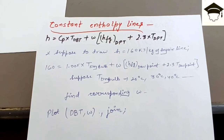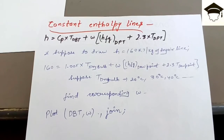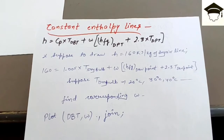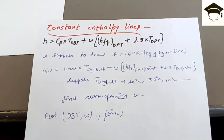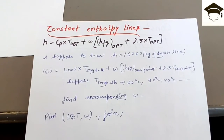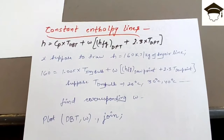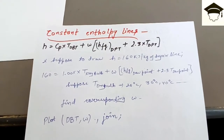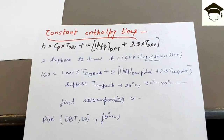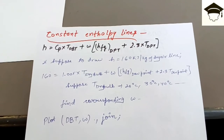Suppose we have to draw H equals 160 kilojoules per kilogram of dry air. You substitute H equal to 160, CP equal to 1.005, and for the dry bulb temperature you can arbitrarily assume values — for example, 20°C, 30°C, 40°C, 50°C. To draw a line you need at least two points, so I have found three points corresponding to 20°C, 30°C, and 40°C.